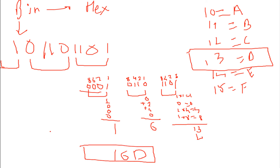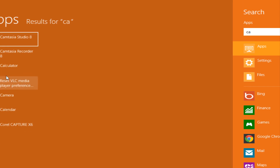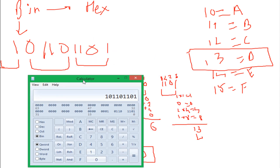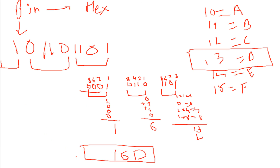Let's cross-check: 16D in hex converts back to 101101101 in binary — the same pattern. This confirms our answer. That was all about basic numeric conversions. Thank you for watching. Don't forget to like us on Facebook, please subscribe, and see you in the next tutorial.